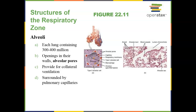Each alveolus is part of a group of sacs with openings. There are pores that allow materials to move in and out, and the alveoli are surrounded externally by pulmonary capillaries.